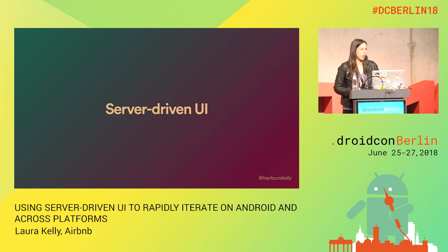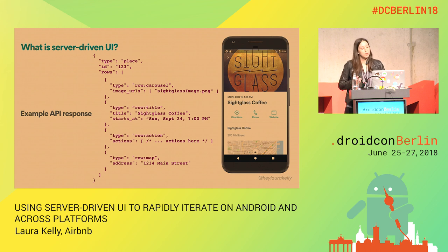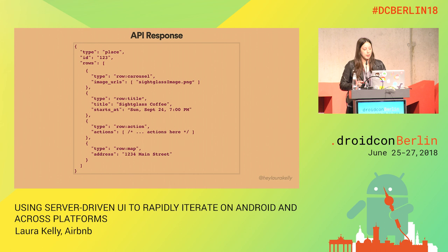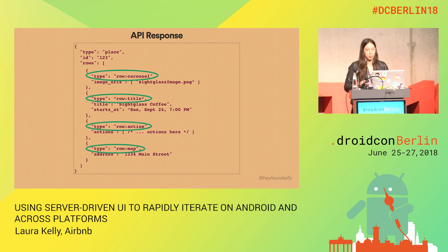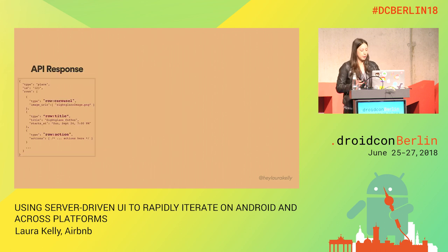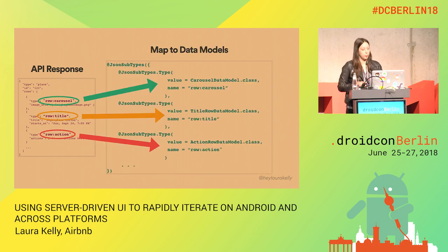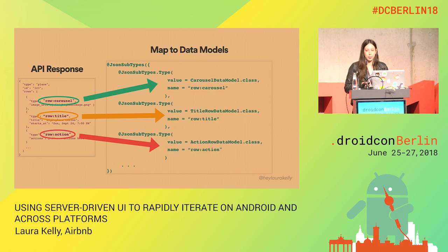The system that we settled on is something we call server-driven UI. Server-driven UI is a system in which your API response dictates which components are rendered on the screen. This is what the API response looks like for a reservation — there's an array that has different types indicated for each component that's being sent up to the client. We take this API response, send it to the client, and then on the client we parse that into data models. So you can see we take that carousel row type and we map it to a carousel data model.